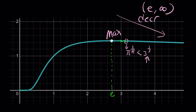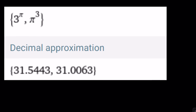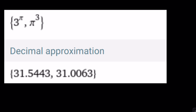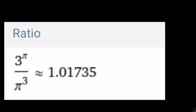3 to the power pi is approximately 31.5443, and the other is close to 31, so they're pretty close — the ratio is about 1.7%. This brings us to the end of the video. Thank you for watching. Please comment, like, and subscribe. I'll see you next time. Until then, be safe, take care, and bye-bye.